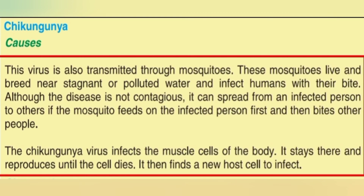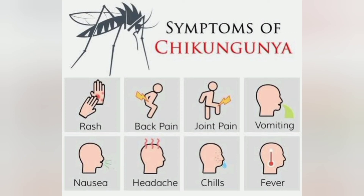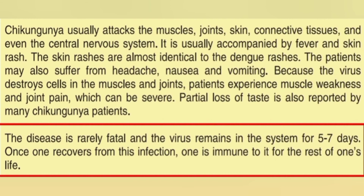The symptoms of chikungunya are: rashes, back pain, joint pain, vomiting, fever, chills, headache, and nausea. The virus basically attacks the muscles, joints, connective tissues, and central nervous system. The skin rashes are almost identical to dengue rashes. Loss of taste is also reported by many chikungunya patients. This disease is really fatal — fatal means the disease that causes death — but the virus remains in the system for five to seven days.